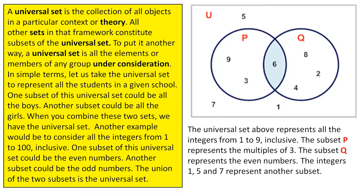In simple terms, let us take the universal set to represent all the students in a given school. One subset of this universal set could be all the boys. Another subset could be all the girls.